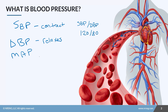The third metric is mean arterial pressure, or MAP. You'll see this a lot when we talk about vasopressor medications or in patients with neuro disorders. It's a calculation of the average pressure within the arterial system, looking at the full cardiac cycle.